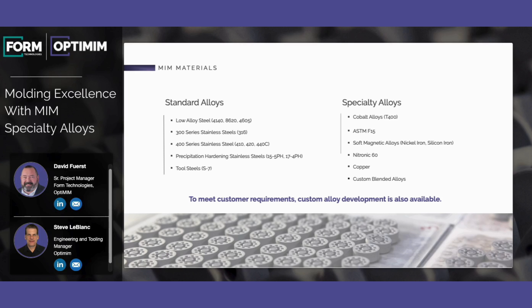On the left side, we have a category that we would consider to be our standard alloys, where quite a bit of our production would utilize. We have low alloy steels, 300 series stainless steels, 400 series stainlesses, precipitation hardening stainlesses, and also tool steels.